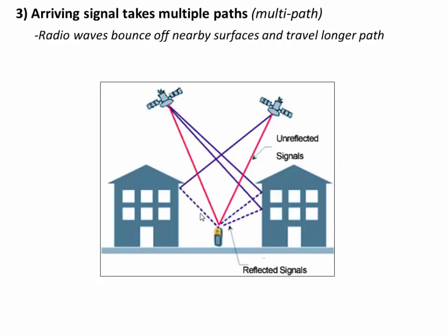Another very common source of error is called multipathing. If your GPS receiver is surrounded by tall objects like buildings or trees, a radio wave from the satellite may bounce off a building before it reaches your receiver. In that case, the radio wave has taken a longer path than expected, so you'd compute a range that's too long, which causes you to misestimate your location. That's called multipathing.